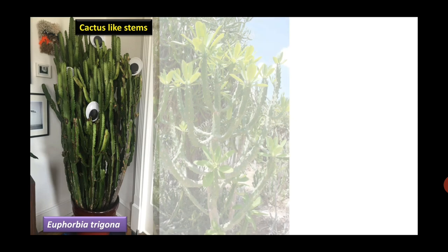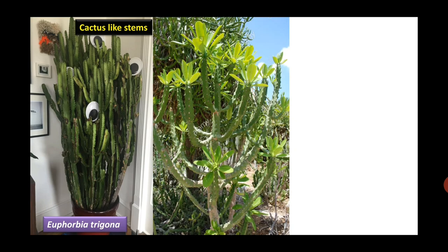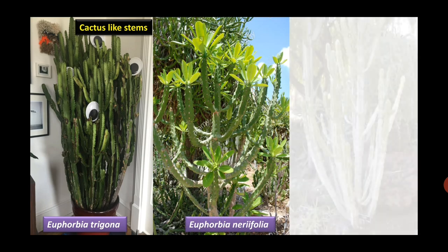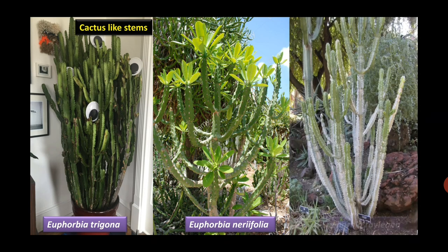The stem is herbaceous or woody. The stem becomes cactus-like in several species of Euphorbia, like Euphorbia trigona, Euphorbia neriifolia, and Euphorbia royaliana.